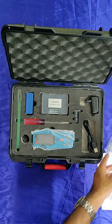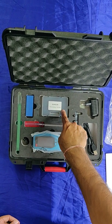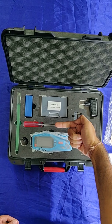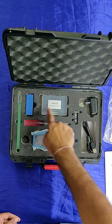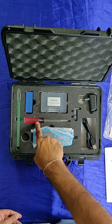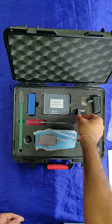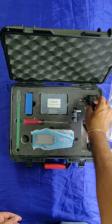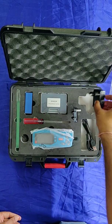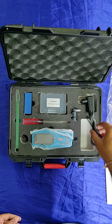First I will explain the content of the box. This is the main unit, this is the roughness tester stylus, this is the test specimen, this is the holder to test specimen, this is the screwdriver. This is for adjustment for the roughness tester.